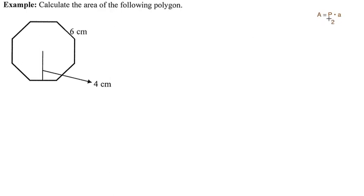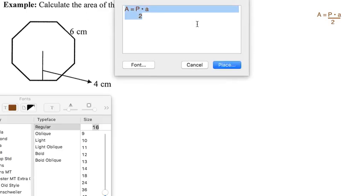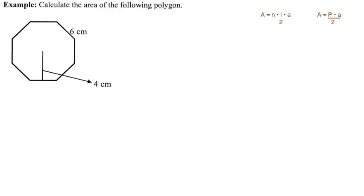The reason why this works is because it's a simplified version of another formula. The area of the polygon equals the number of sides times the area of each of those triangles. Each triangle is the base times the height divided by two. So the area equals the number of sides times one side length times the apothem divided by two. This formula is more versatile.